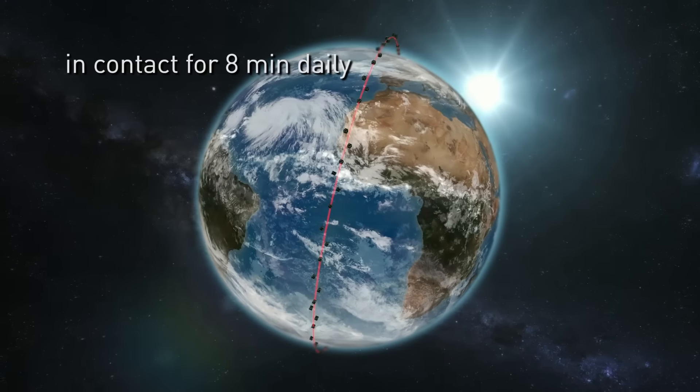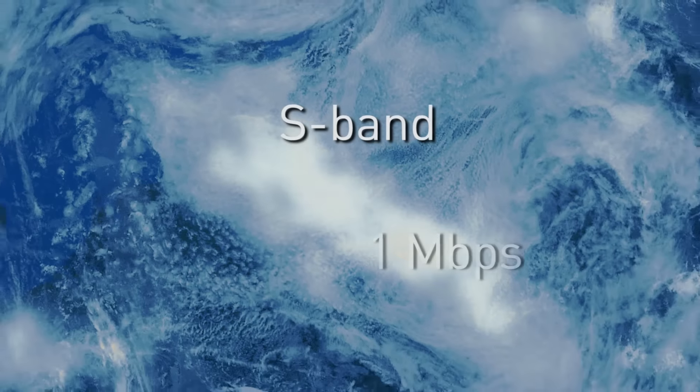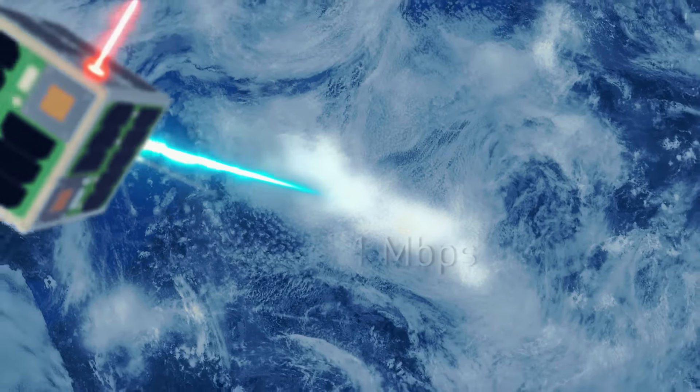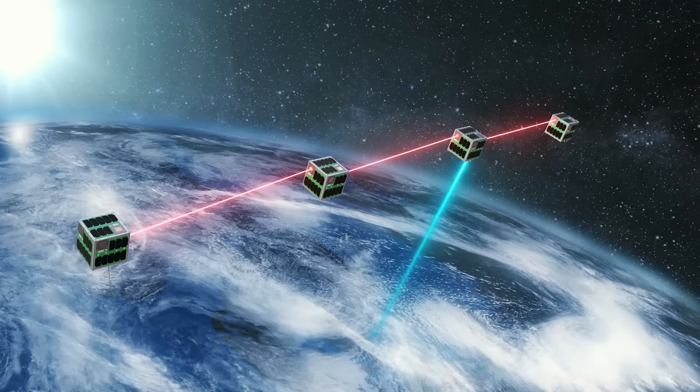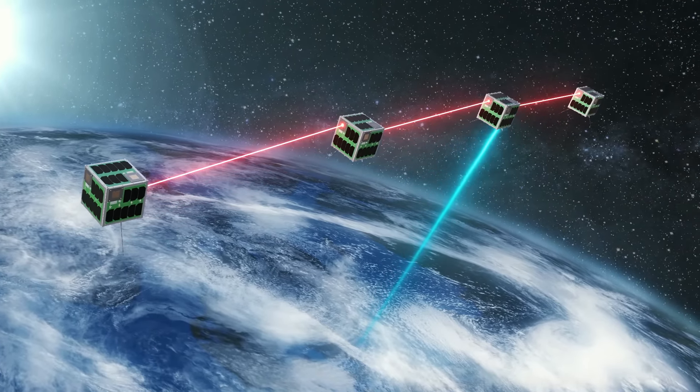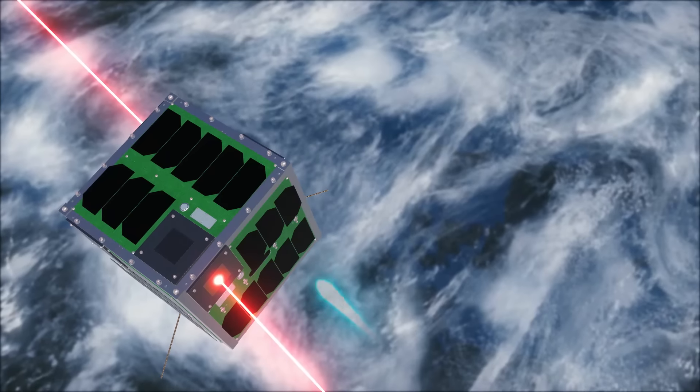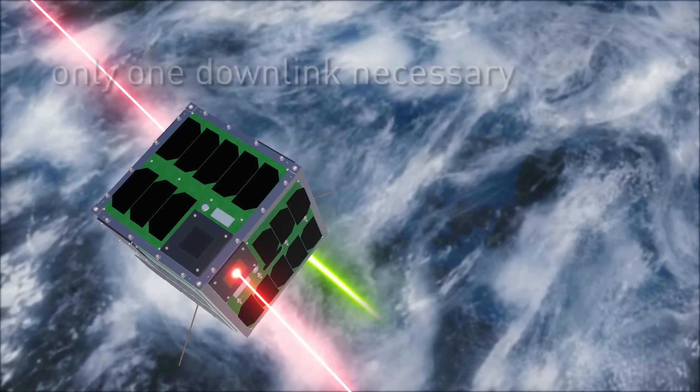During ground station contact, the data collected from the swarm can be sent down to Earth by S-band connection at a data rate of 1 Mbit per second. At the same time, instructions and tasks can be transmitted to the swarm by 100 kbps uplink. Once one satellite is within communication range with the ground station, the entire swarm could be reached via inter-satellite communication.